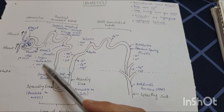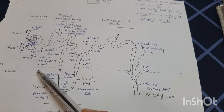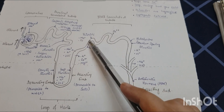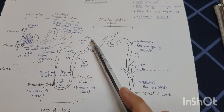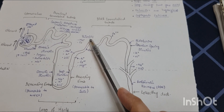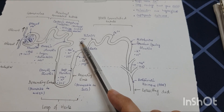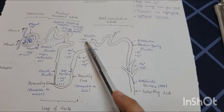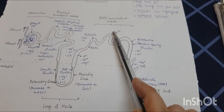The thiazides act on the proximal part of the distal convoluted tubule and result in reabsorption of sodium and chloride, while causing excretion of calcium ions.